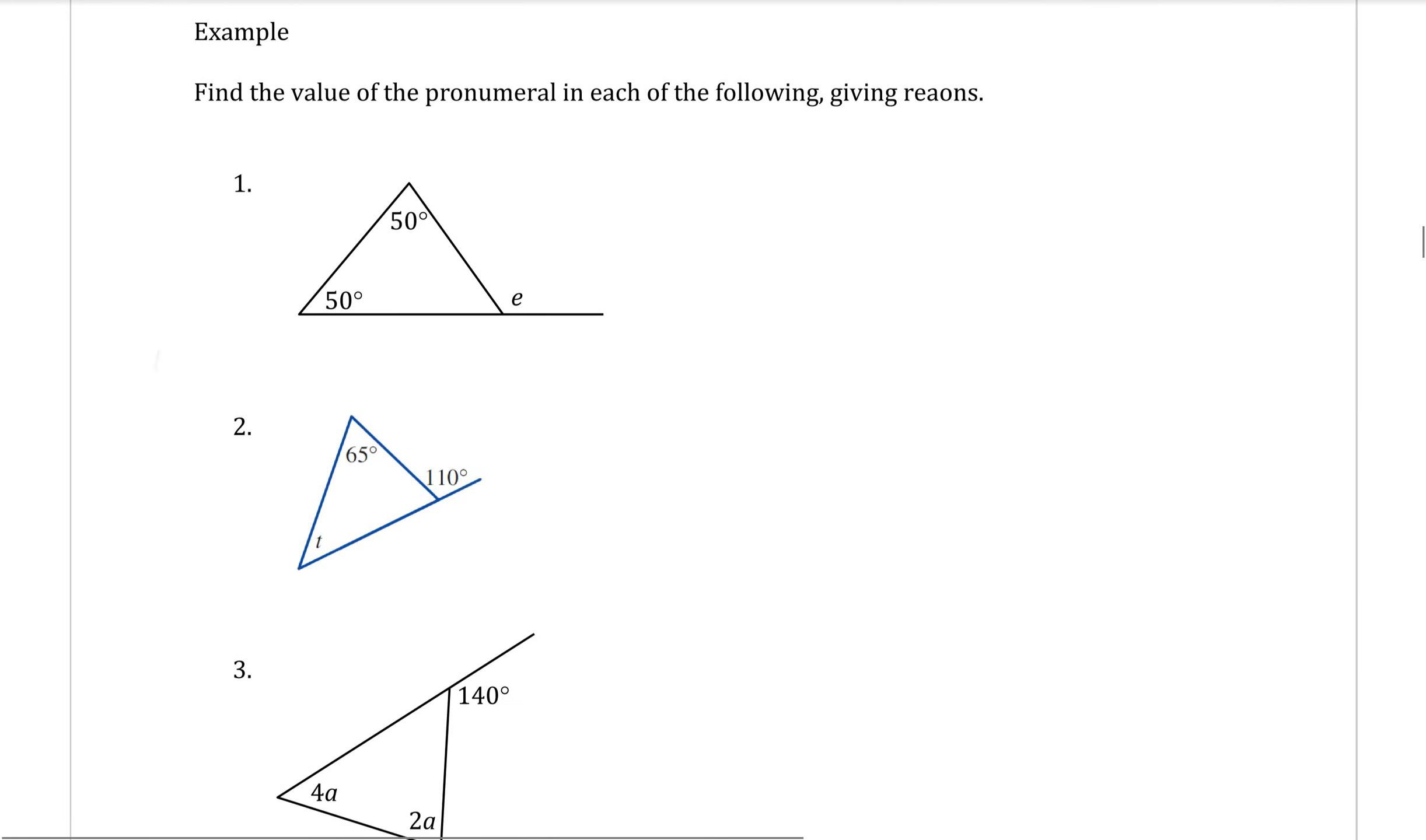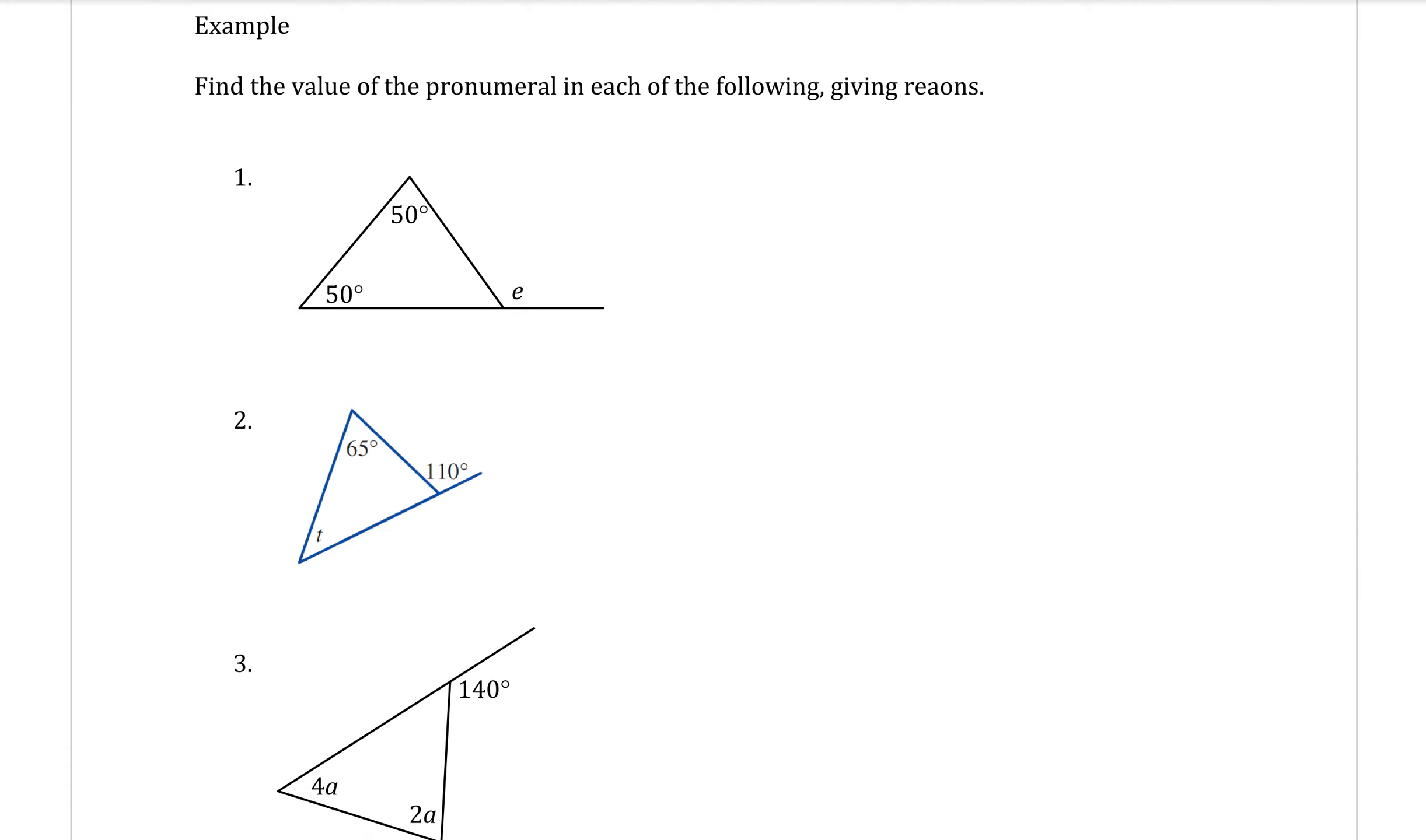In example number one here, you can see that the side of the triangle has been extended out and we're trying to find an angle outside of our triangle. To find the exterior angle, which in this case is called E, all we have to do is add these two interior angles together. So that means E is equal to 50 plus 50, and that's equal to 100 degrees.